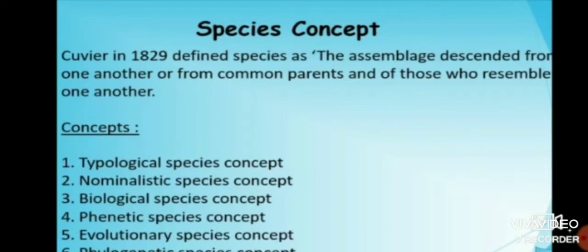There are five major species concepts: the typological species concept, the nominalistic species concept, the biological species concept, the phonetic species concept, and the evolutionary species concept.